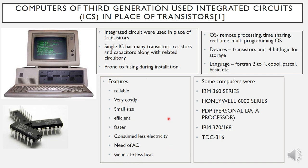Features of third generation: reliable, very costly as it was the first small-size computer, efficient, faster, consumed less electricity but still needed AC. Some computers of third generation were IBM 360, Honeywell, PDP, IBM, and TDC.